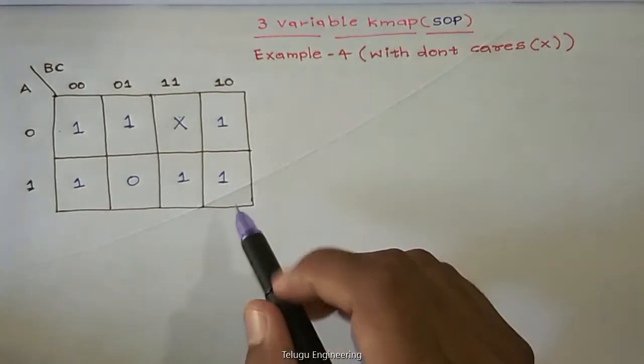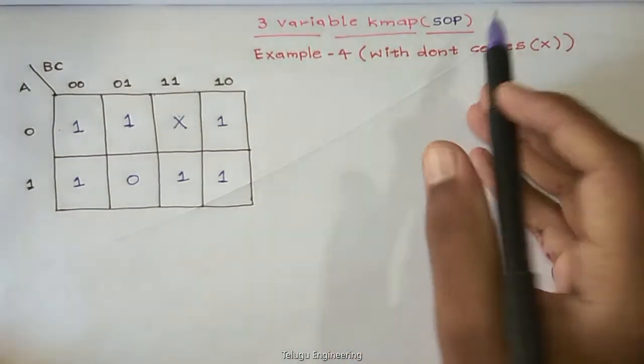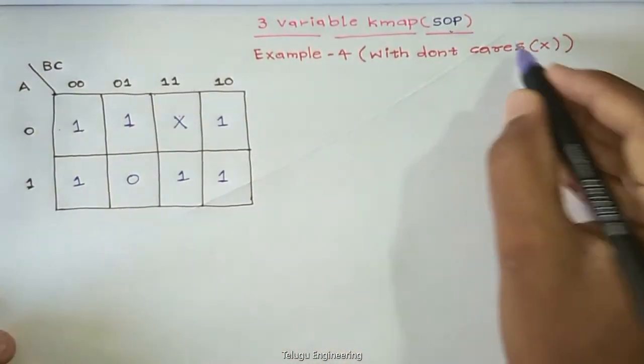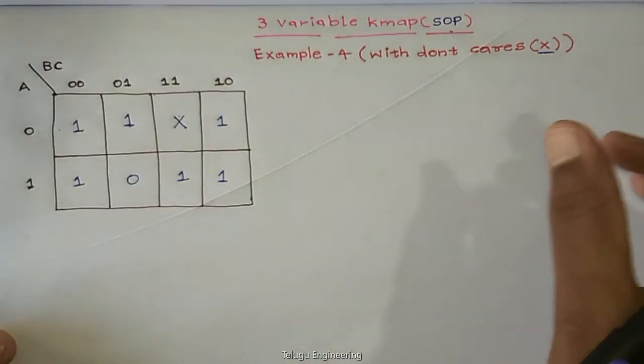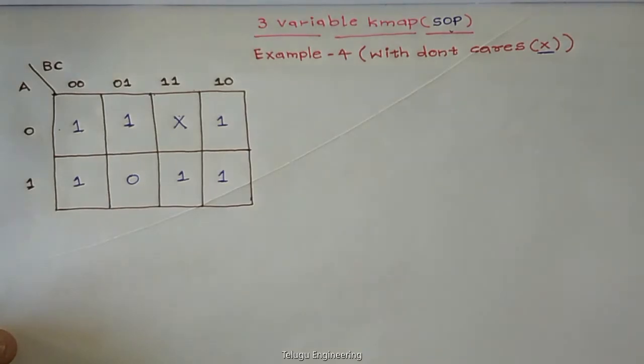This is the third example of three variables, the fourth example where the SOP formula includes don't care conditions. If we don't care, we are very careful, then we will see errors again. So, let's do it.